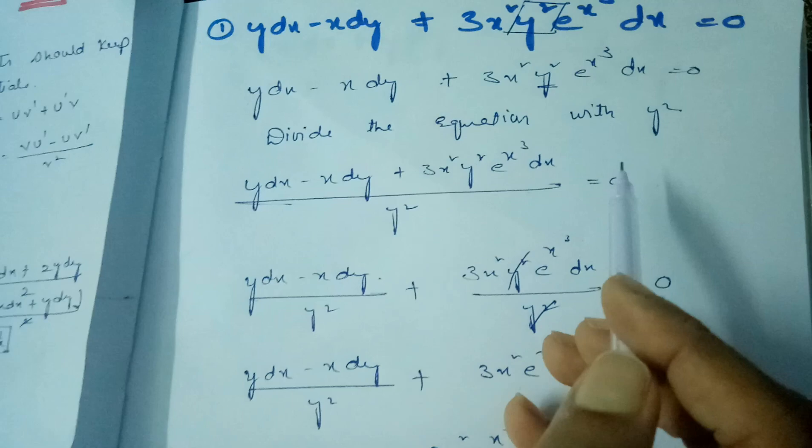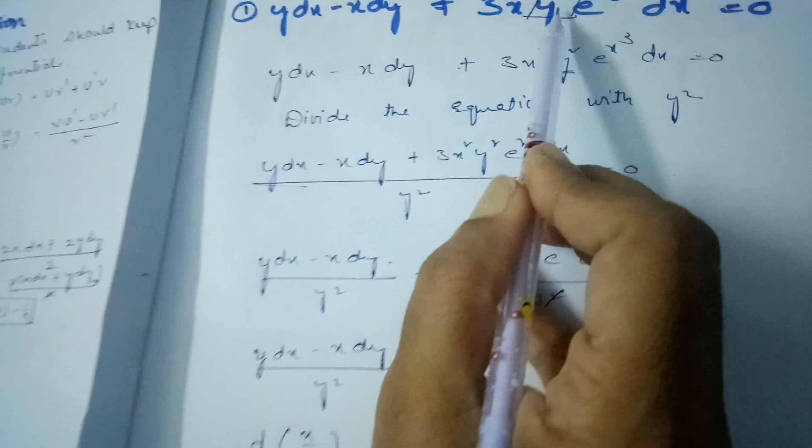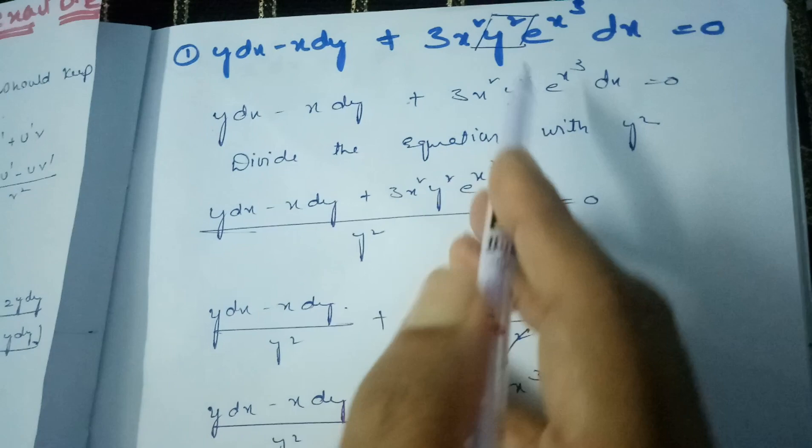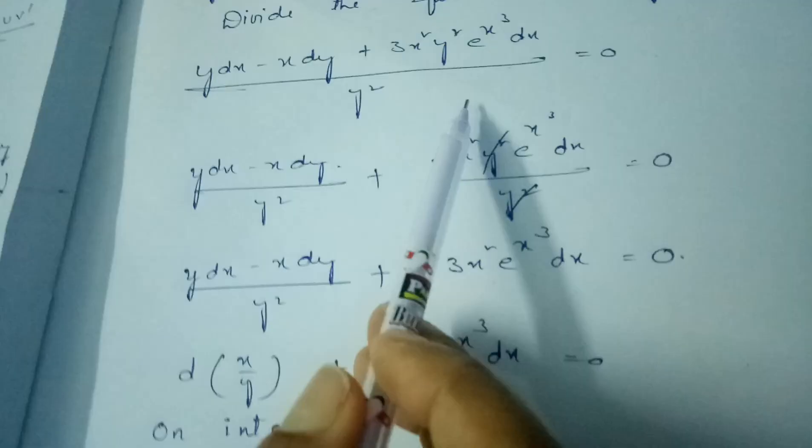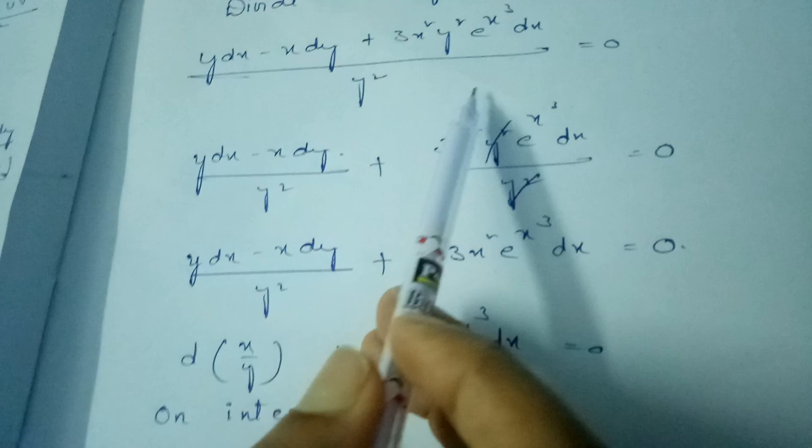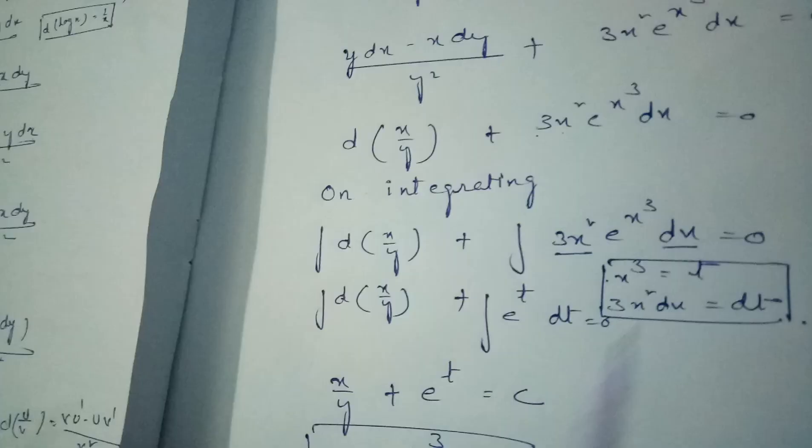The logic here is: in the original equation y dx minus x dy + 3x²y² · e^(x³) dx = 0, y² appears among the x terms. To eliminate y², we divide the entire equation by y². After dividing, the expression can be written in the form d(x/y) + 3x² · e^(x³) dx = 0.